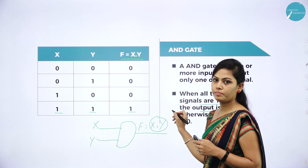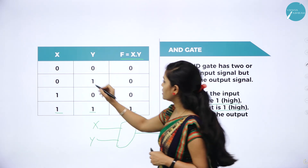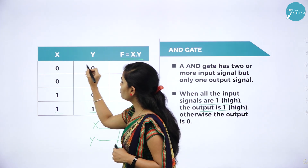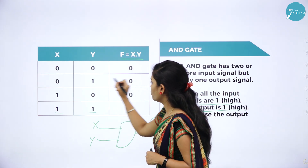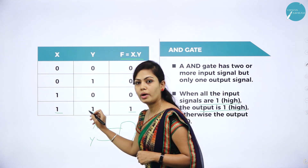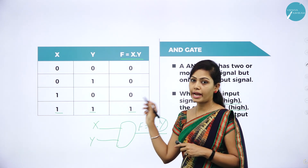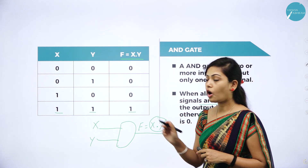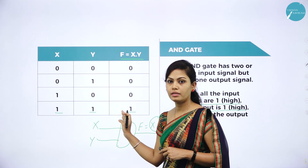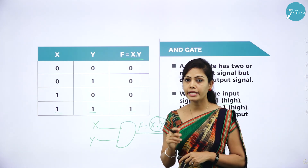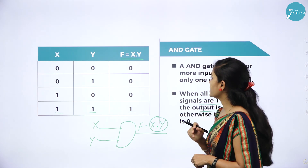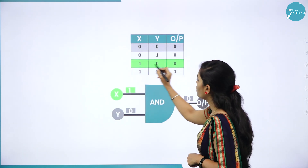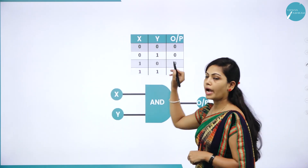The truth table of AND gate uses the dot operator: 0 · 0 = 0; 0 · 1 = 0; 1 · 0 = 0; 1 · 1 = 1. When all inputs are high, the output is high; otherwise output is 0. In AND gate we use logical multiplication. This is the truth table of AND gate.